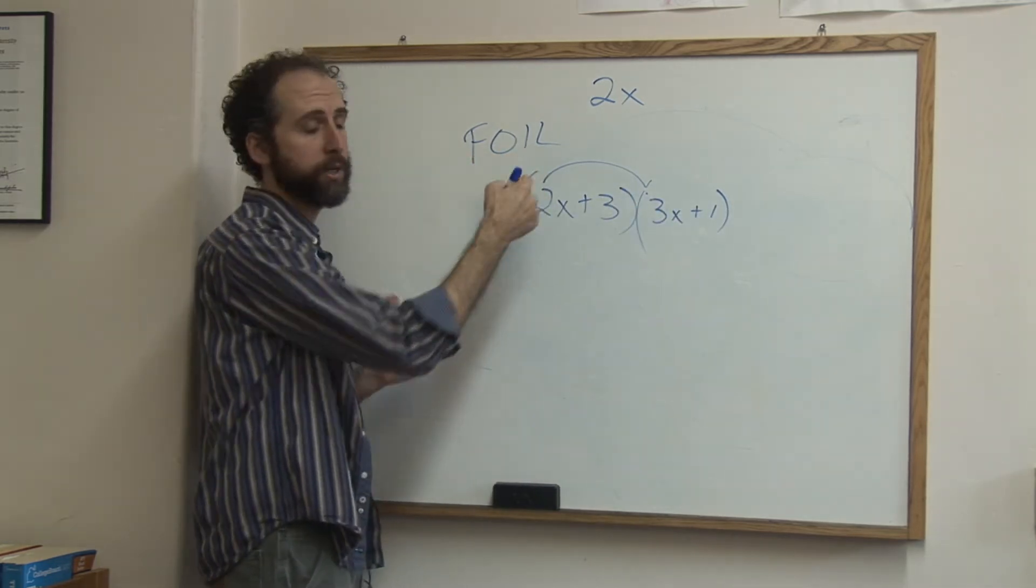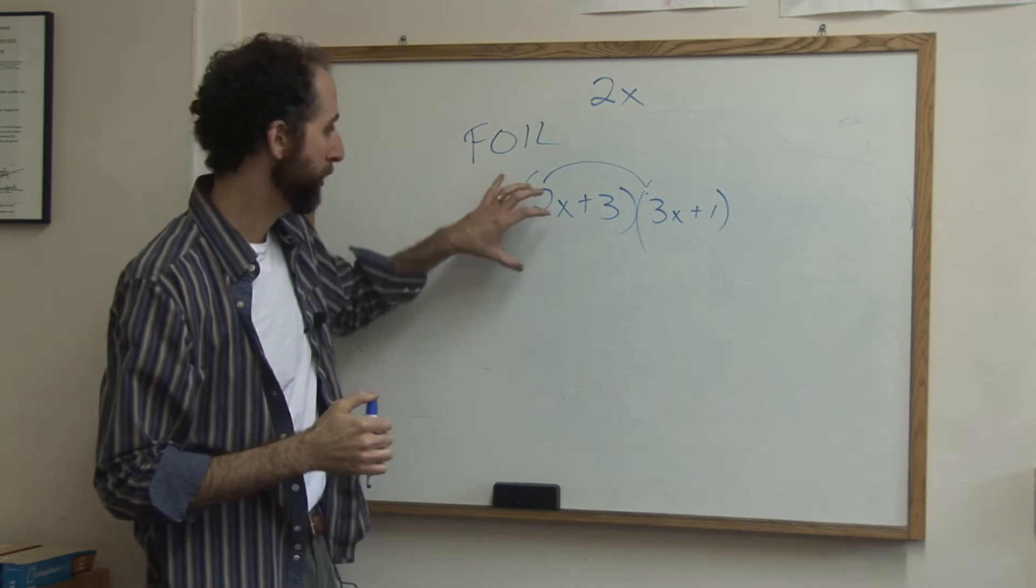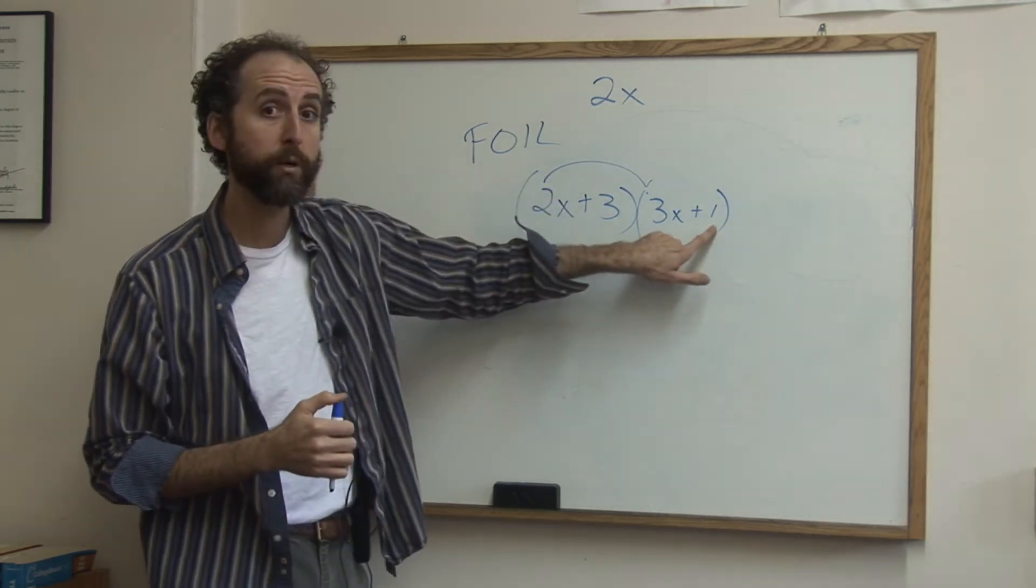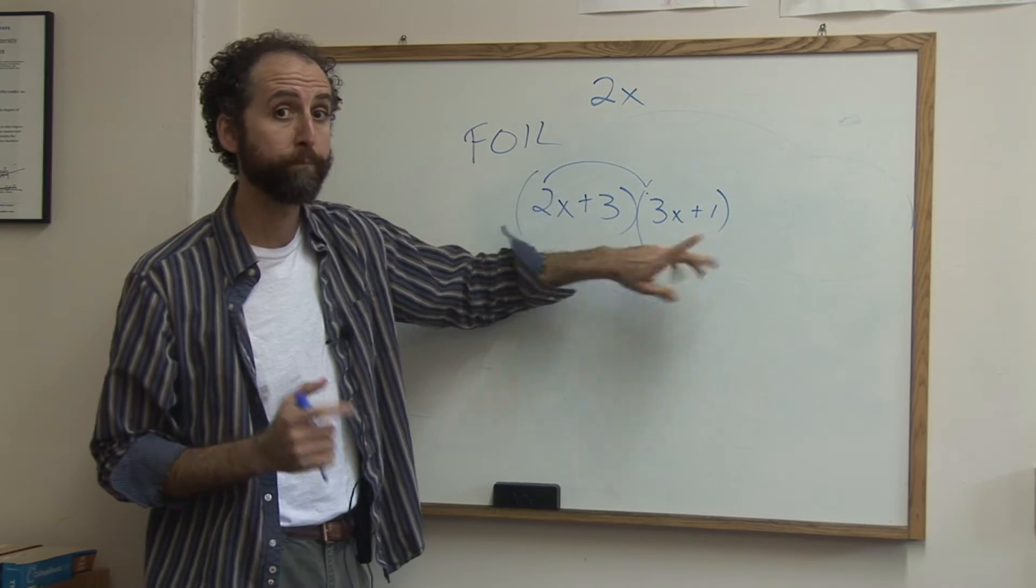First, outside, inside, last. FOIL just means multiply. It really just means distribute. You're going to distribute this guy to both of these. Then you're going to distribute this guy to both of these. So let's do it.